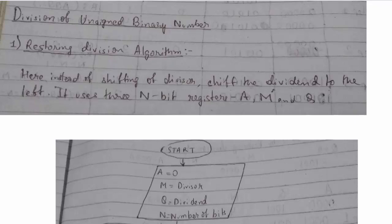Hello everyone, I hope you are doing well. Today we'll be continuing data presentation and computer arithmetic, and we'll be seeing division of unsigned binary numbers. The first method we'll be covering is the restoring division algorithm. Division is a much more complex operation than multiplication. Given a dividend D and a divisor V, the quotient is Q and the remainder is R, related by: D equals Q times V plus R.